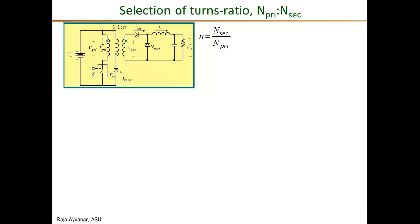Next we come to the important turns ratio between the primary winding and the secondary winding, denoted by the lowercase n, where n equals N_secondary over N_primary. We have derived in the forward converter analysis videos that the output voltage V_o is given by n times D times the input voltage V_in. We will make use of this equation to determine the value of n.